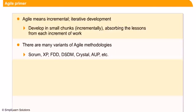Scrum is a framework we will cover in detail in the next slide. XP — Extreme Programming — is a software development methodology intended to improve software quality and responsiveness to changing customer requirements. FDD — Feature Driven Development — is an iterative and incremental software development process that is client-centric, architect-centric, and pragmatic. DSDM — Dynamic Systems Development Method — is an agile project delivery framework primarily used as a software development method.